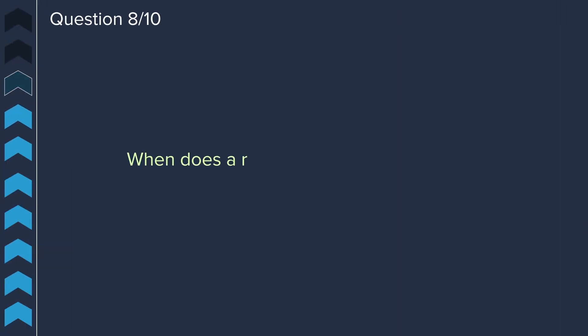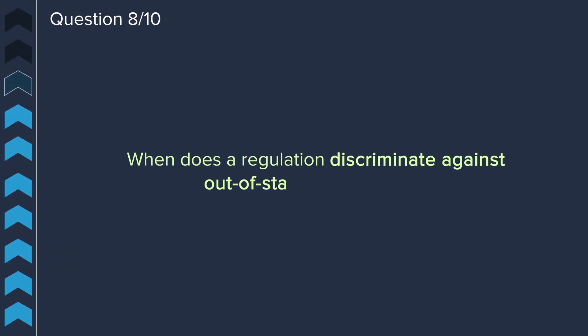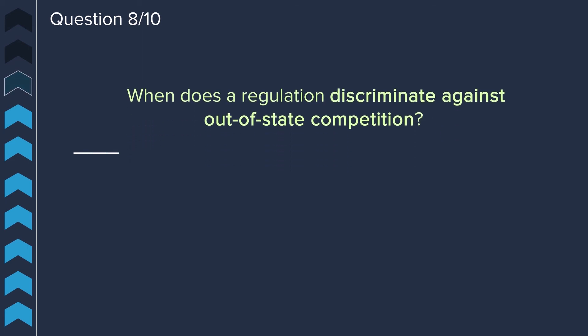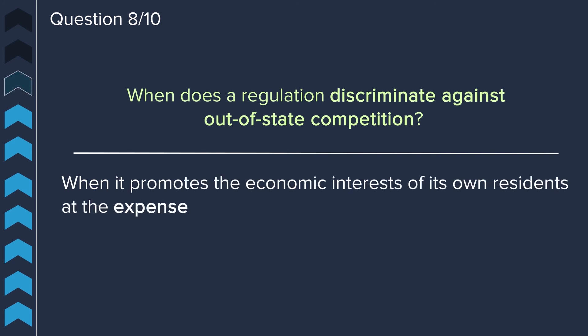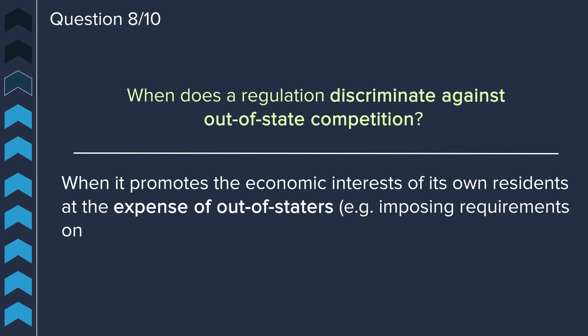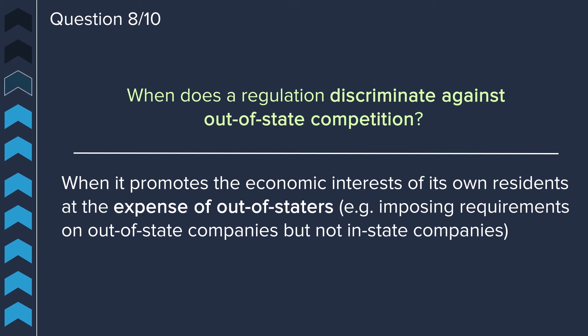Question eight. When does a regulation discriminate against out-of-state competition? It discriminates when it promotes the economic interests of its own residents at the expense of out-of-staters. For example, imposing requirements on out-of-state companies but not on in-state companies.